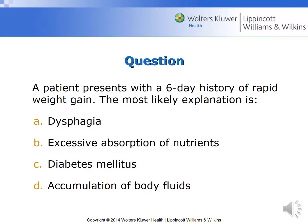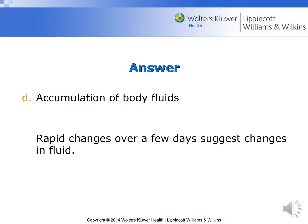Here's a question for you. A patient presents with a six-day history of rapid weight gain. The most likely explanation is: dysphagia, excessive absorption of nutrients, diabetes mellitus, or an accumulation of body fluids? The key term here is rapid weight gain. If you answered accumulation of body fluids, you'd be correct — rapid changes over a few days suggest changes in fluid, not tissue.